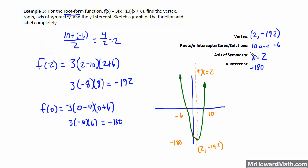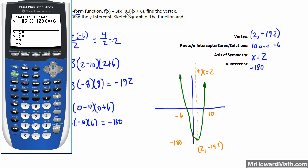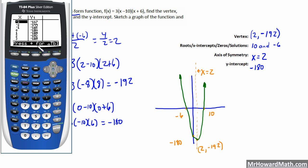We can check this with our calculator. I've gone ahead and put our original function into y equals so we can look at this. We can check the y-intercept quickly by looking in our table. When x is zero, we see our y-intercept is 0 comma negative 180, and we have that correct.